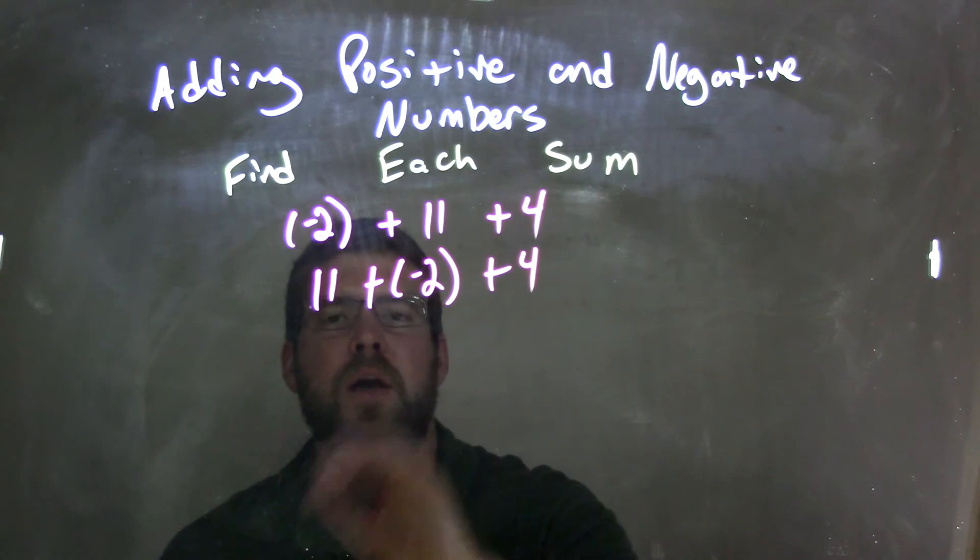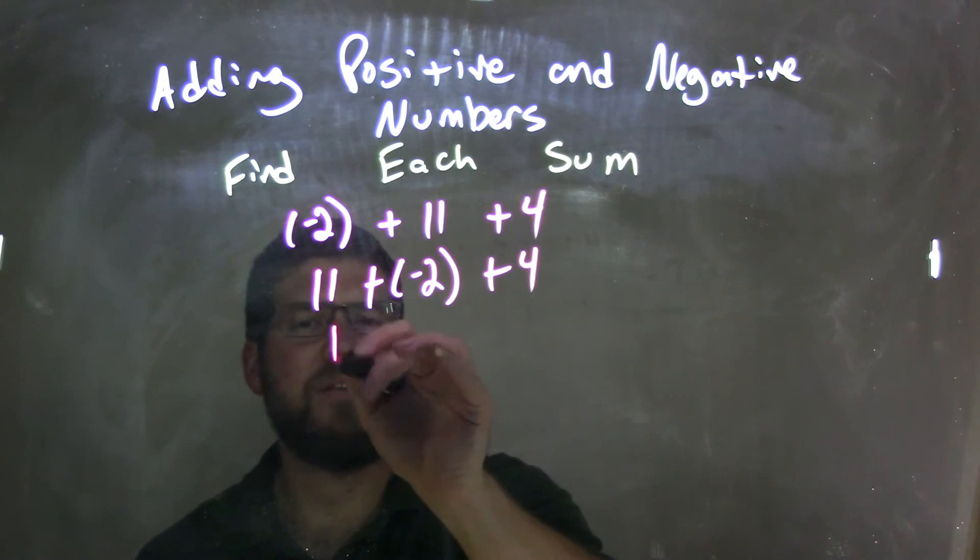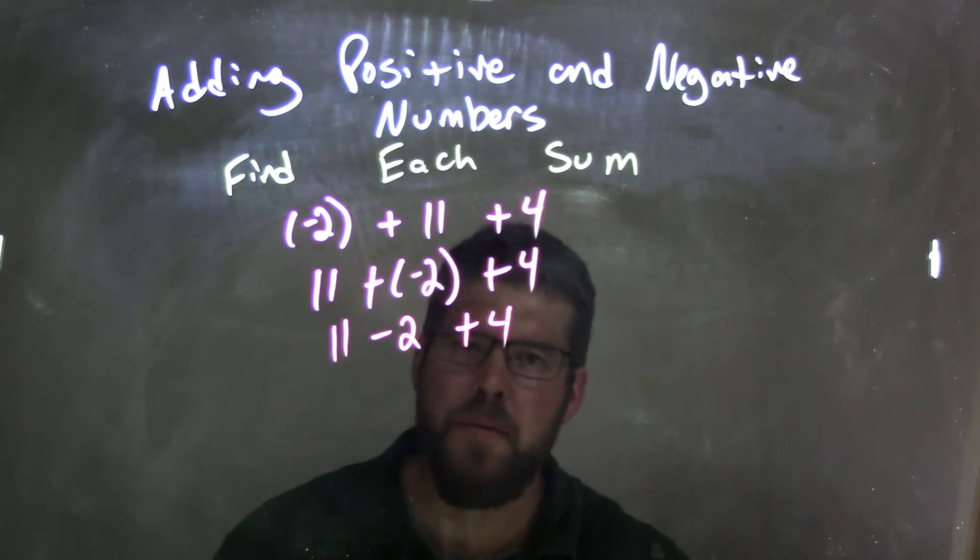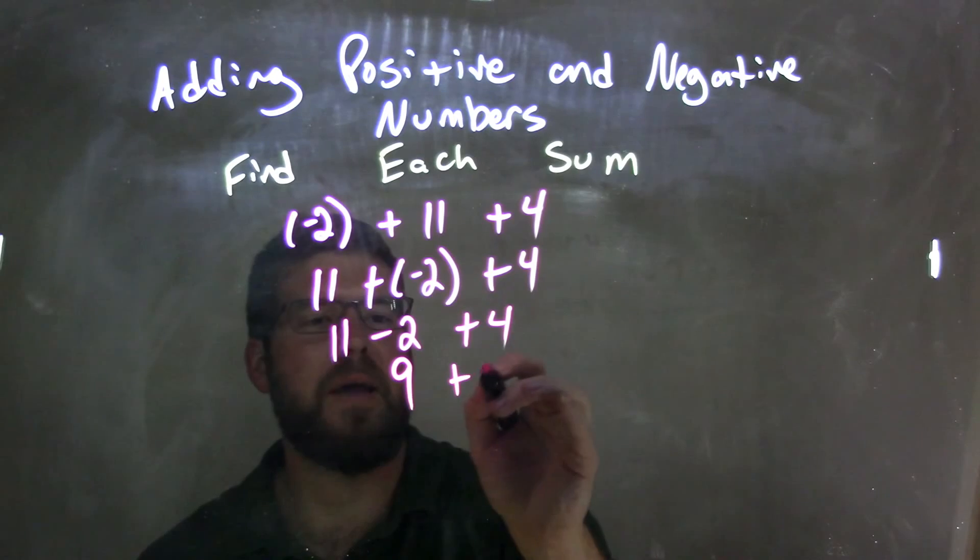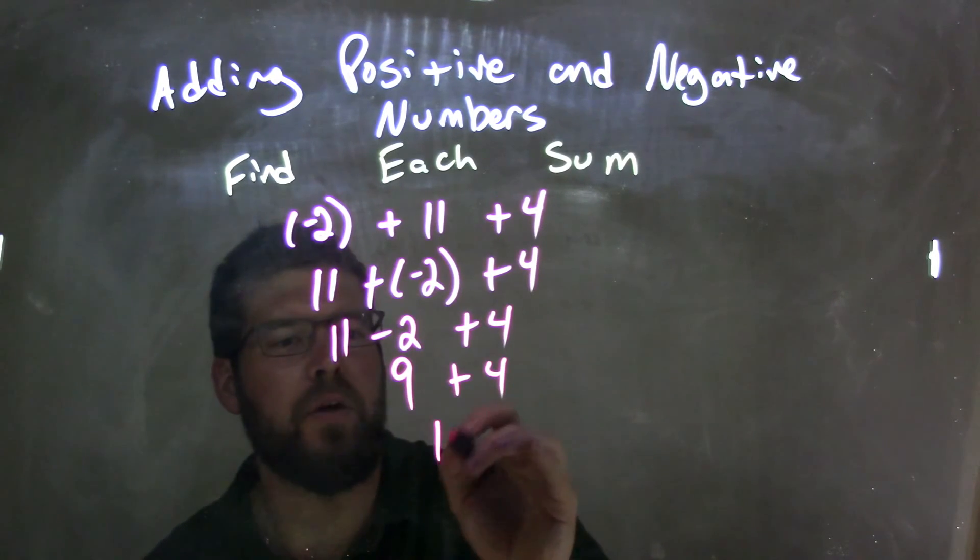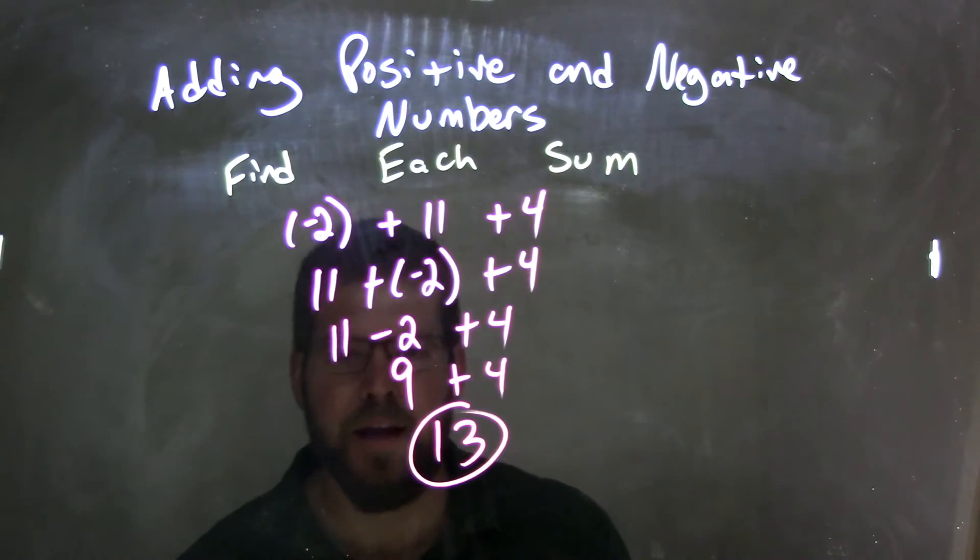So 11 plus a negative 2. Well, 11 plus a negative 2 is the same thing as 11 minus 2 plus 4. What's 11 minus 2? 11 minus 2 is just 9, and we add 4 to that, and 9 plus 4 comes out to be 13, which is our final answer.